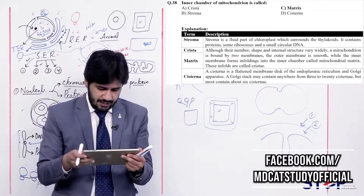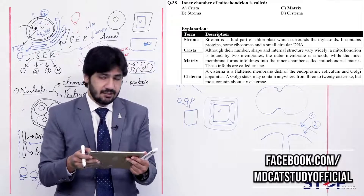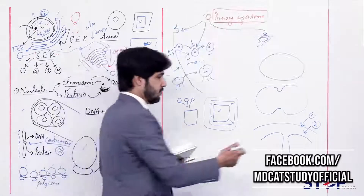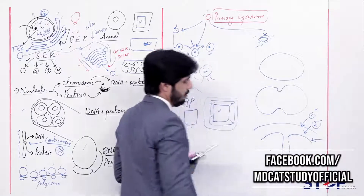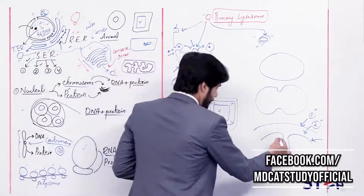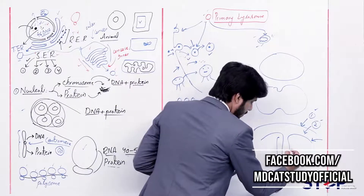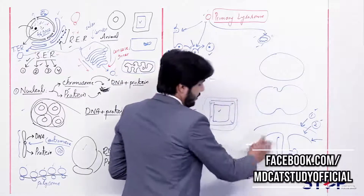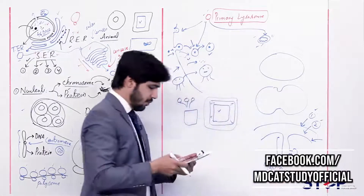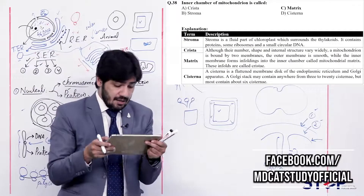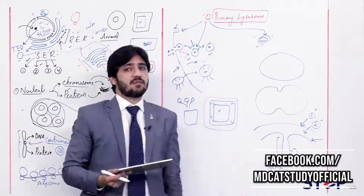Question 38: The inner chamber of mitochondrion is called (alpha) crista, (beta) stroma, (charlie) matrix, (delta) cisternae. The mitochondrion has an outer membrane, outer compartment, inner membrane with infoldings called cristae, and F1 particles (knob-like structures) on the cristae. The innermost space containing all the material is the matrix. The right answer is charlie — matrix. The outer space is the intermembrane space. The term stroma applies to chloroplasts, not mitochondria.